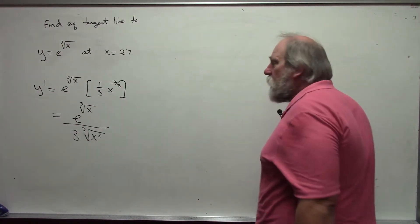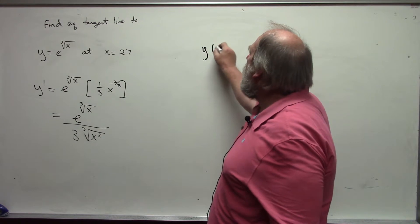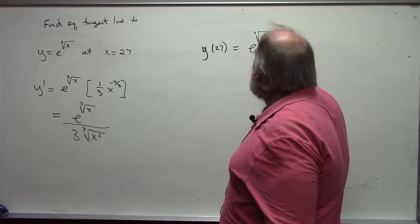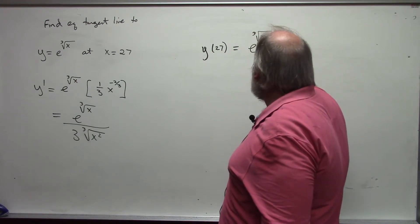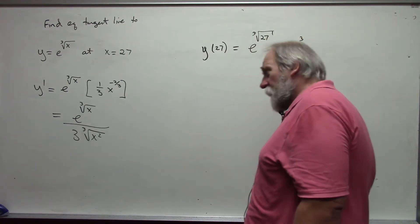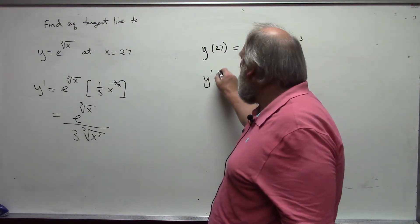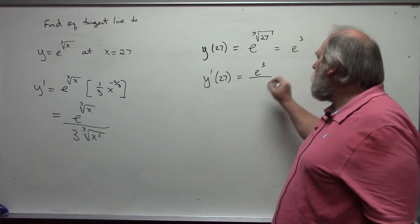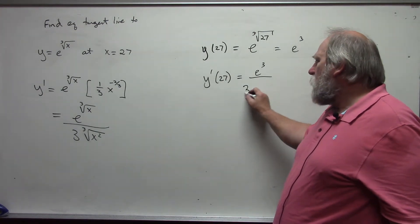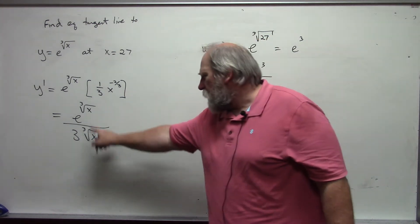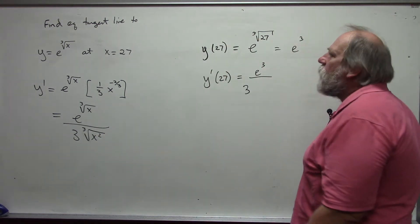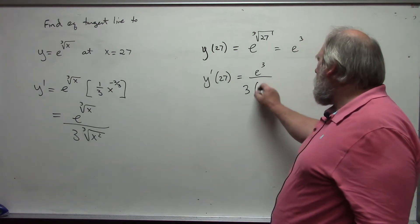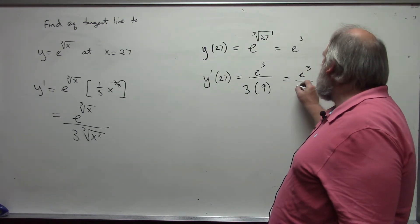For the equation of the tangent line I need the point. The y value at x equals 27 is e to the cube root of 27, and the cube root of 27 is 3, so this is e cubed. My derivative at x equals 27 is e cubed over three times the cube root of 27 squared. Taking the cube root first: the cube root of 27 is 3, squared is 9, so I get e cubed over 27.